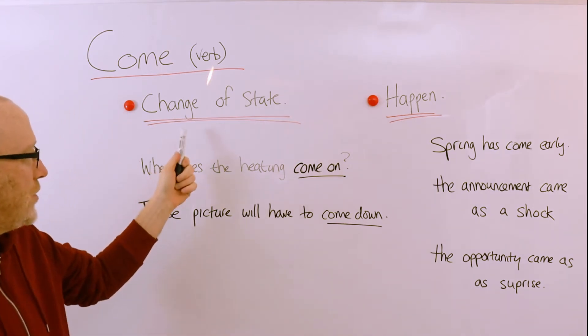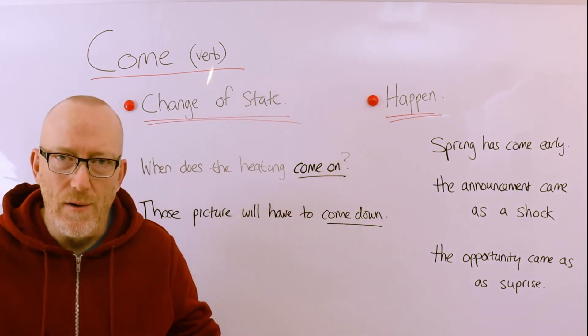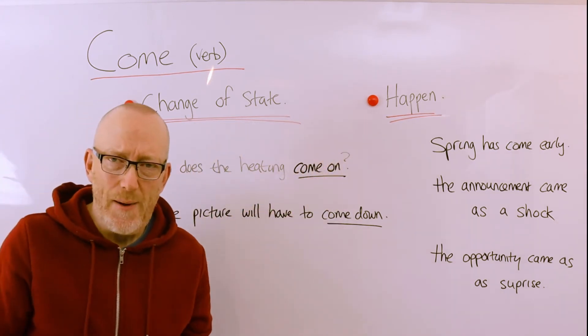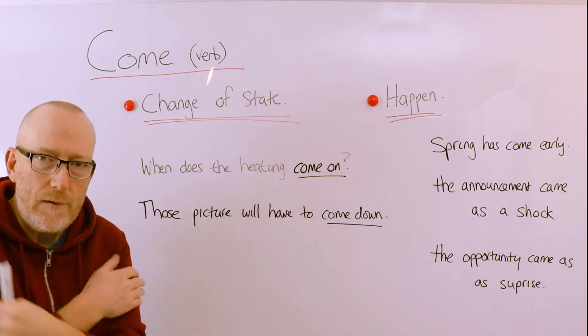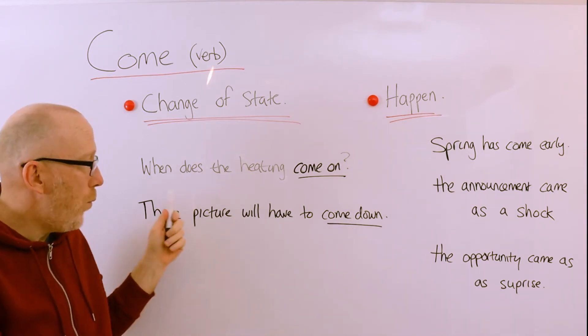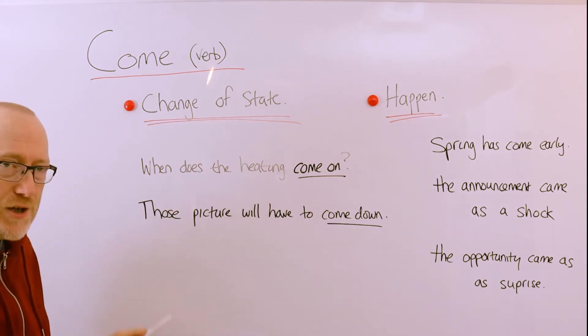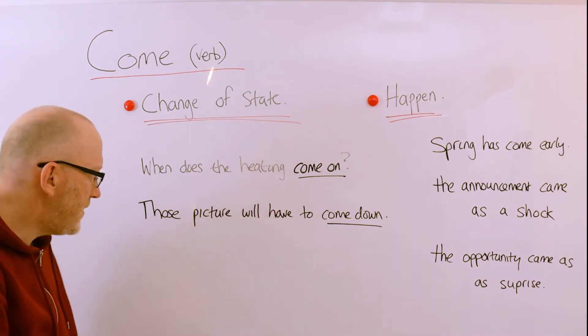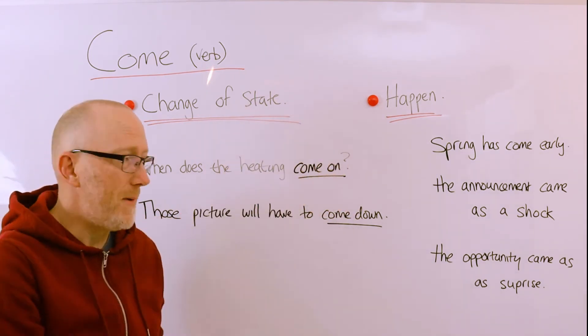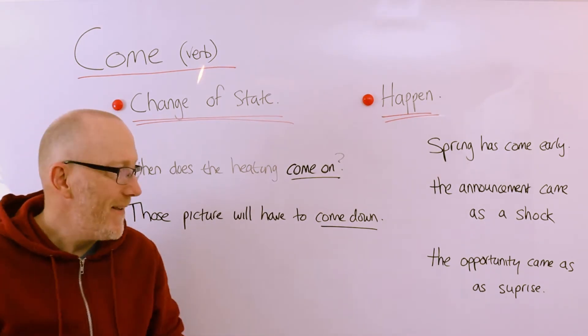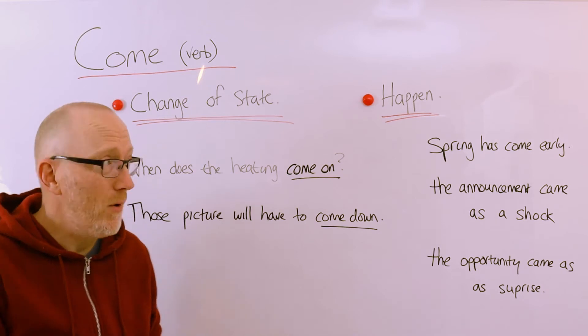So we're moving on to some other commonly used ways and very interesting ways we use this verb come, and these are to talk about the change, the changing state of something, and to just describe things that just happen. So change of state and things that just happen. So changing state, for example, when does the heating come on? It's cold now, then perhaps your heating is on a timer, so when does the heating come on? When does it change from being off to on? And I imagine you have some pictures or paintings on the wall you don't like them, so you might say those pictures will have to come down. They are currently on the wall, they will have to come down. What I'm also hoping you will notice is that we're starting to see lots of phrasal verbs. Come on, come down, are just some examples. There are lots, probably hundreds of phrasal verbs using this verb come.